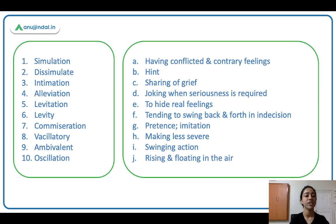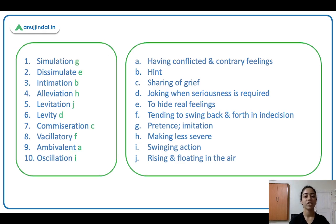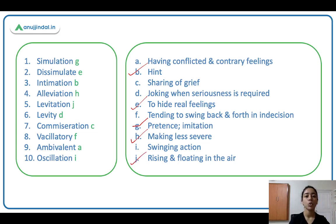Let's do some match the followings — pause the video and match your answers. Simulation is J — pretence, imitation, to imitate something. Dissimulate is E — to hide real feelings, to conceal. Intimation is B — hint. Alleviation is H — making less severe. Levitation is J — rising and floating in the air. Levity is D — joking when seriousness is required. Commiseration is C — sharing of grief. Vacillatory is F — tending to swing back and forth in indecision. Ambivalent is A — having conflicted and contrary feelings, not able to decide. And oscillation is I — swinging action.